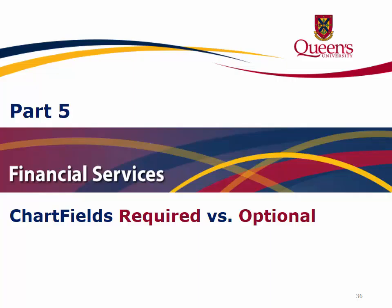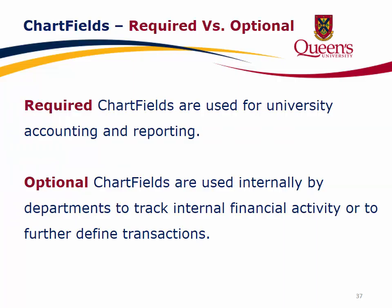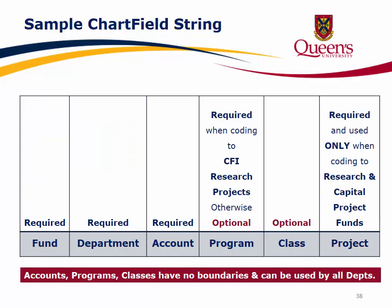Part 5: Chartfields — Required versus Optional. Required chartfields are used for university accounting and reporting. Optional chartfields are used internally by departments to track internal financial activity or to further define transactions. Fund, Department, and Account are all required chartfields. The Program ID is required when coding to CFI research projects; otherwise it is optional. The Class ID is an optional chartfield. The Project ID is required and used only when coding to research and capital project funds. Accounts, programs, and classes have no boundaries and can be used by all departments.